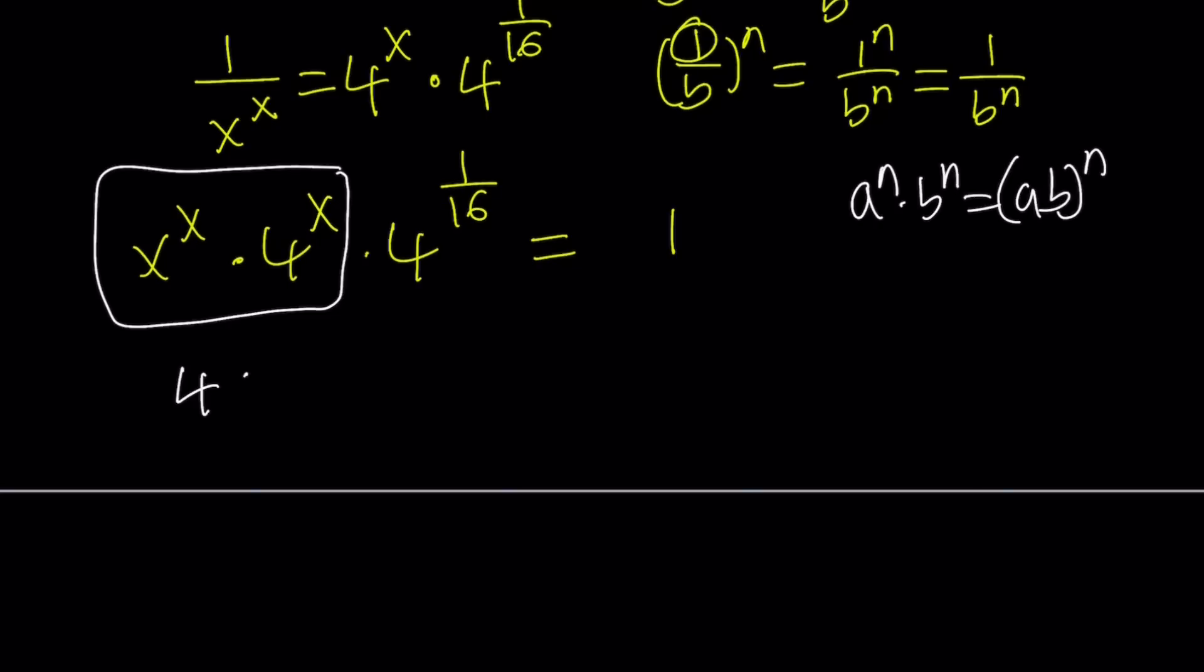And what am I going to do with 4 to the power 1 over 16? Let's divide both sides by that. So I can write it as 1 over 4 to the power 1 over 16. So this kind of puts the x's together as much as possible, right? And the number on the other side. So it's kind of like something you would want to do.